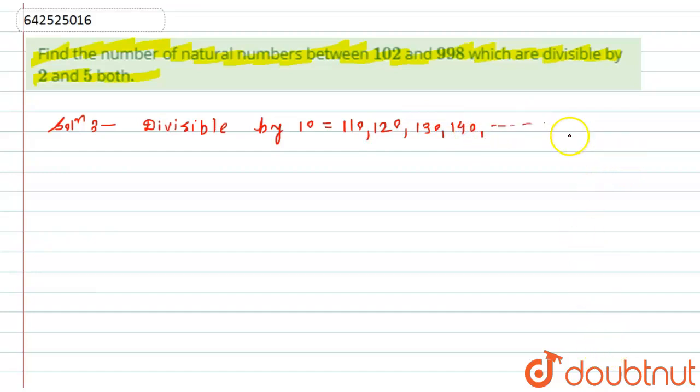Now if we look at this, this is nothing but looking like an arithmetic progression, that is AP. So what here? This is the first term, okay?